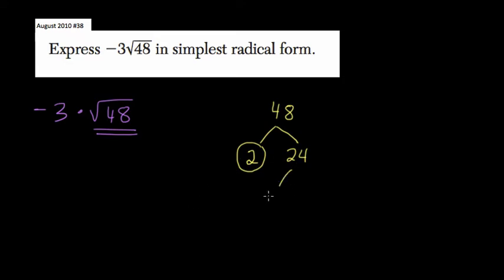24 can still be factored out. I factor it out to 4 times 6. 4 can still be factored to 2 times 2. So I'm circling these prime factors. And 6 is 2 times 3.